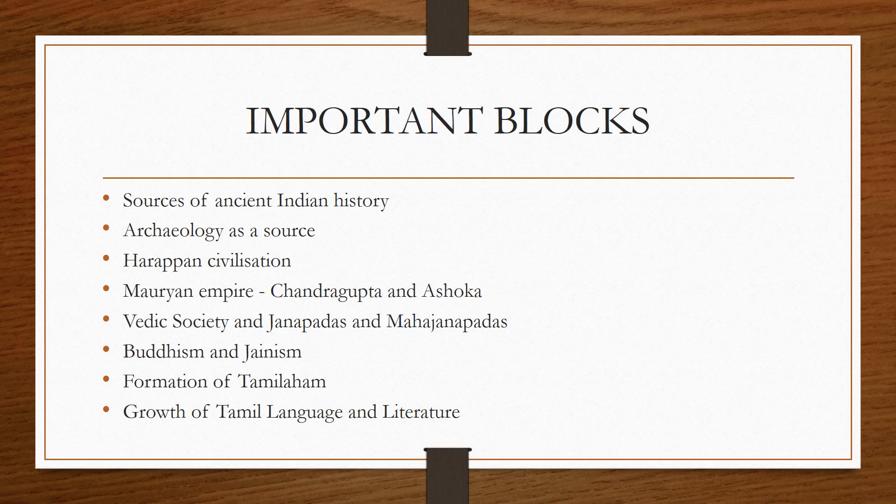Similarly, for the Mauryan Empire, you need to know about Chandragupta Maurya's coming to power and about Ashoka. You should know how expansion happened, how they consolidated the kingdom, the administration, how the spy network worked, and the role of Chanakya — also known as Kautilya. Covering Maurya gives you a good grip on getting a fair number of questions from these blocks.